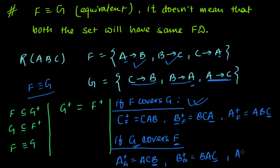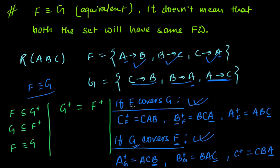Now, the closure of c in g: c can determine b, and b can determine a. As it has a, this functional dependency holds. So g covers f as well. Since both are true — f covers g and g covers f — we say that f and g are equivalent.